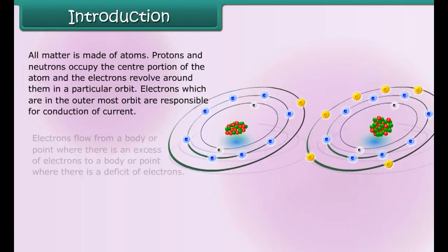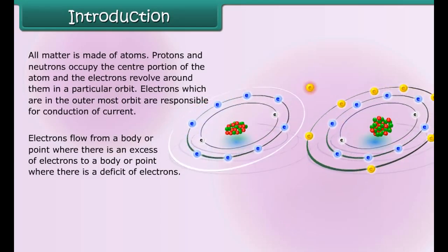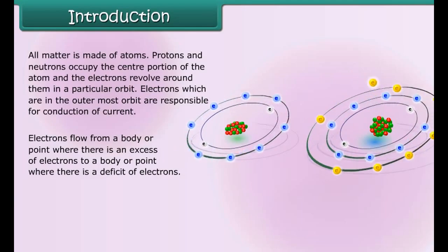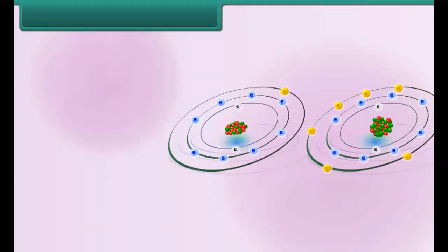Electrons flow from a body or point where there is an excess of electrons to a body or point where there is a deficit of electrons. In other words, electrons flow from a body that is negatively charged to a body that is positively charged.